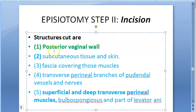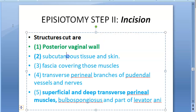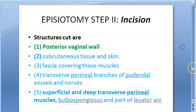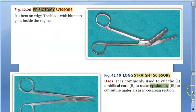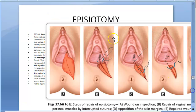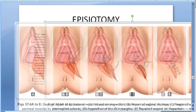So: inside you are cutting the posterior vaginal wall; outside you are cutting the skin, subcutaneous tissue, and some muscles. The episiotomy scissors used is the Bush scissors; you can also use a long straight scissors. Now we have to go to the repair.